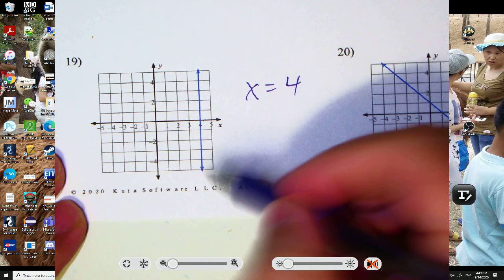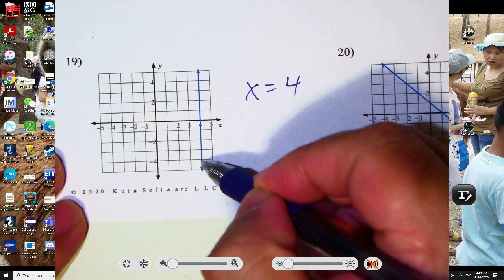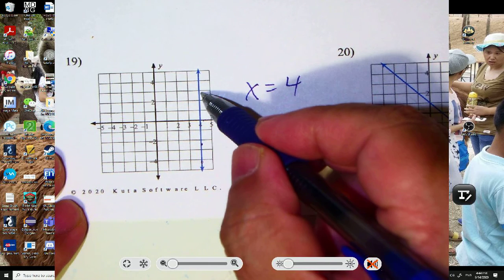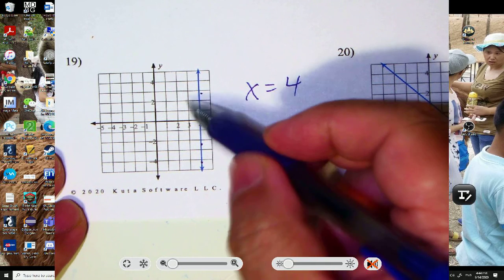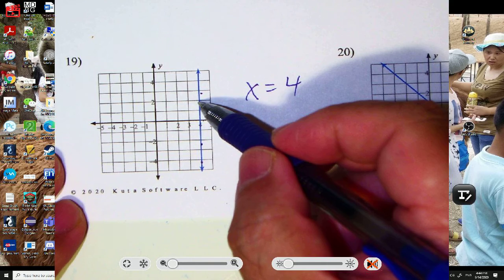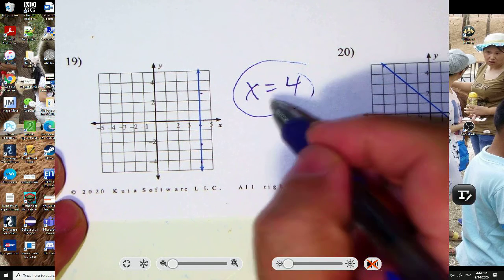You can ask yourself, what's the x value here? The x value here is 4. So along this line, the x value is always 4. And it doesn't matter what the y value is. The y value here is 2, but the x value is 4.